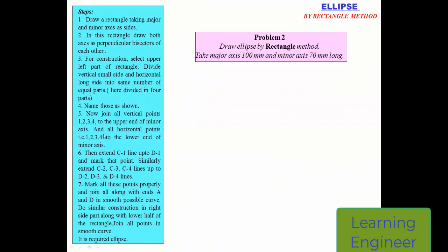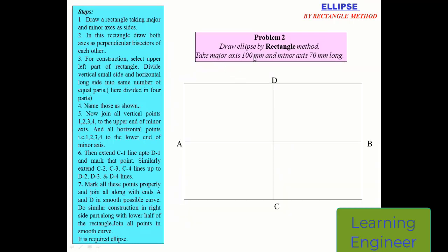These are the actual steps to be followed for drawing the ellipse by using the rectangle method. We have drawn a rectangle of 100 mm by 70 mm. The distance from this point to this point is 100 millimeter and this point to this point is 70 millimeter. Then we draw two lines by dividing the vertical and horizontal lines into equal parts.